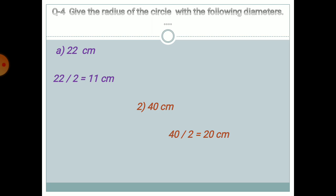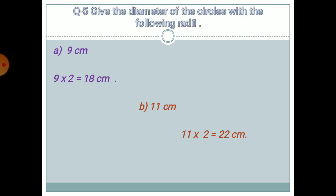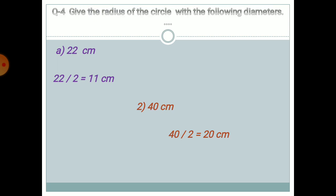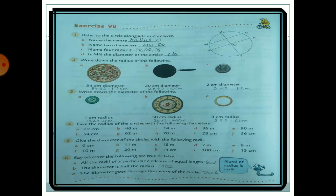Question 5: Give the diameter of circles with the following radii (plural of radius). To find the diameter, multiply by 2. A: 9 cm → 9 × 2 = 18 cm. B: 11 cm → 11 × 2 = 22 cm.